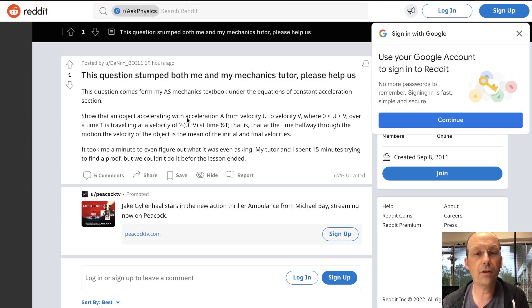Show that an object traveling with an acceleration A from velocity u to v, where u is between 0 and v, over some time t. I don't like time t. I like time interval delta t, but that's fine. It's traveling at a velocity of one half, the average velocity, at the halfway point. That is, the halfway time through the motion, the velocity of the object is the mean of the initial and final velocities. Okay, so I think I have it. Let's switch over here to paper and let's see if we can figure this out.